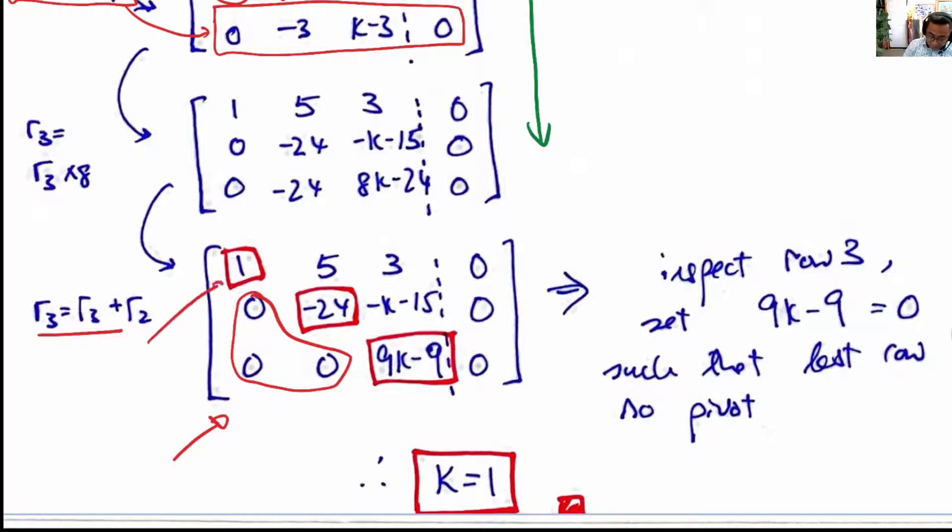I have boxed up the squares to show the pivots. So we have one pivot and we have two pivot. The second pivot and the last pivot is 9k minus 9.